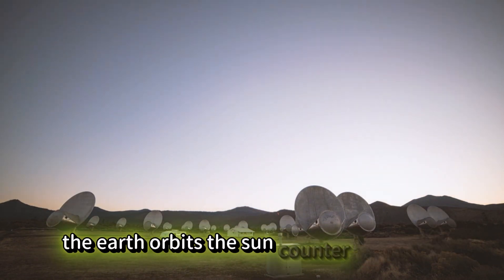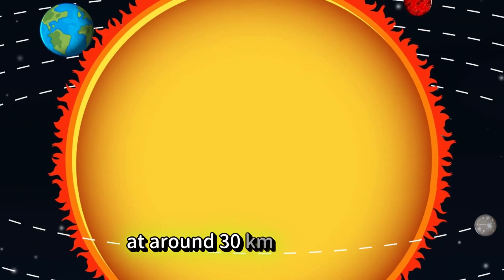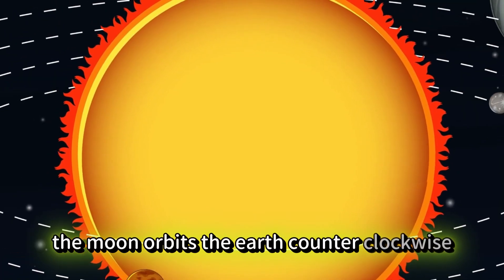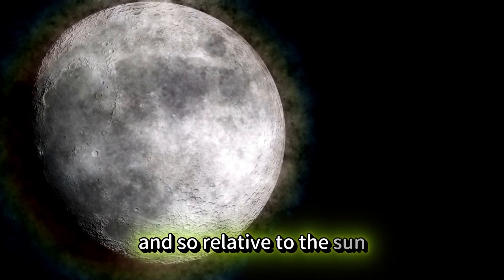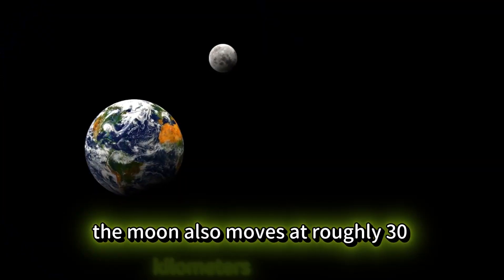The Earth orbits the sun counterclockwise at around 30 kilometers per second. The moon orbits the earth counterclockwise at around 1 kilometer per second. And so, relative to the sun, the moon also moves at roughly 30 kilometers per second.